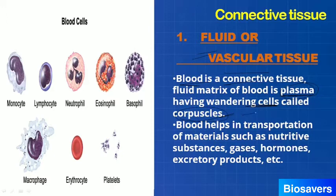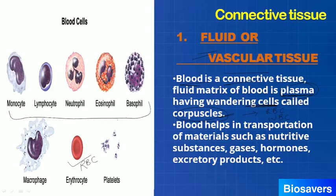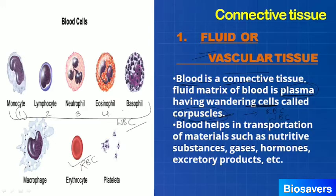There are two main types of corpuscles in blood: RBC and WBC. RBCs are also called erythrocytes and they contain a red color pigment, which imparts red color to our blood and helps in the transportation of oxygen. WBCs are also called leukocytes and are commonly called soldiers of the body because they protect our body by engulfing foreign particles. WBCs are further categorized into five types: monocytes, lymphocytes, basophils, neutrophils, and eosinophils.